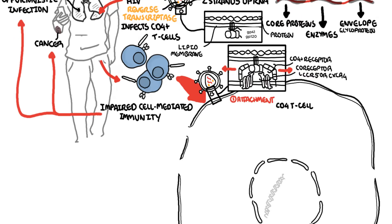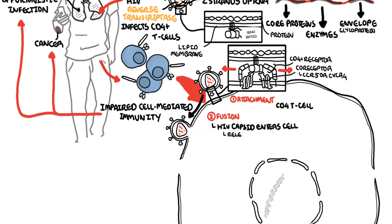The second step of the life cycle is fusion. The process of fusion allows the HIV capsid to enter the CD4 cell. The GP41 protein is used to fuse the HIV envelope with the cell wall. The capsid then releases the viral RNA, the reverse transcriptase, and the integrase.